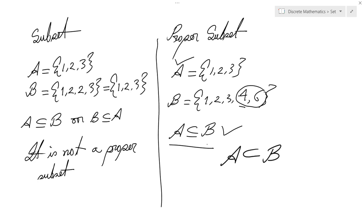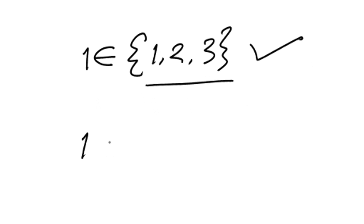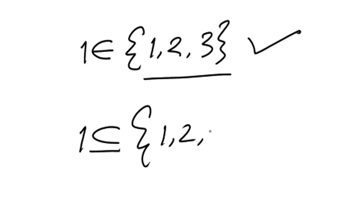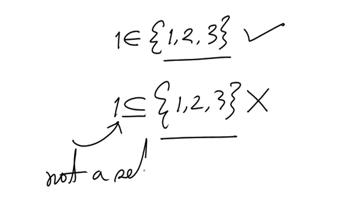I hope you have understood what is subset and proper subset. Let's practice with some examples. Suppose we have a set whose elements are 1, 2, 3. Can we say that 1 is an element of this set? Without any doubt, yes — 1 is an element of this set. Now, can we say that 1 is a subset of this set? No, it is not a subset of this set. Because this 1 is not a set — it is an element of this set.